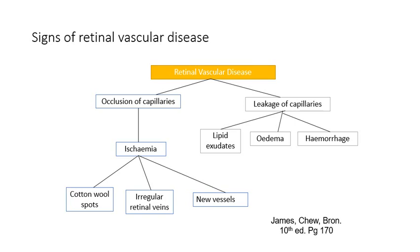Understanding this is very important because there are many diseases that affect the retinal vessels. Some can block the vessels whilst others can cause them to leak. So committing this diagram to memory and knowing what the signs of occlusion or leakage are is really important.